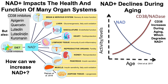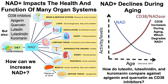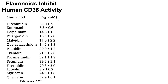But there are other CD38 inhibitors beyond apigenin and quercetin, including luteolin, luteolinidin, and curomanin. The obvious question is: how do these flavonoids compare against apigenin and quercetin as CD38 inhibitors? And that's what was explored in this study.